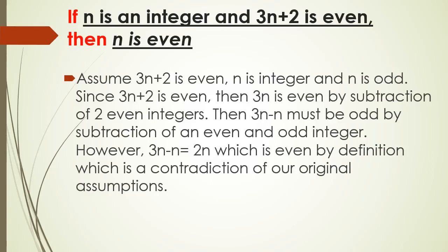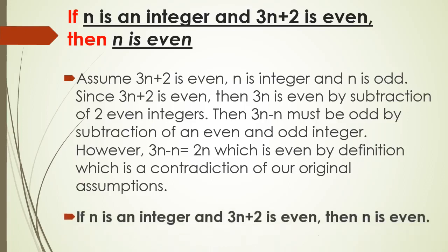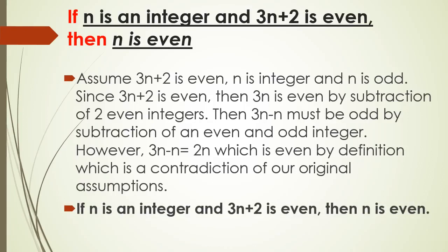Since 3N + 2 is even, then 3N is even by subtraction of two even integers. Then 3N − N must be odd by subtraction of an even and odd integer. However, 3N − N equals 2N, which is even — a contradiction of our original assumptions. Therefore, if N is an integer and 3N + 2 is even, then N is even.